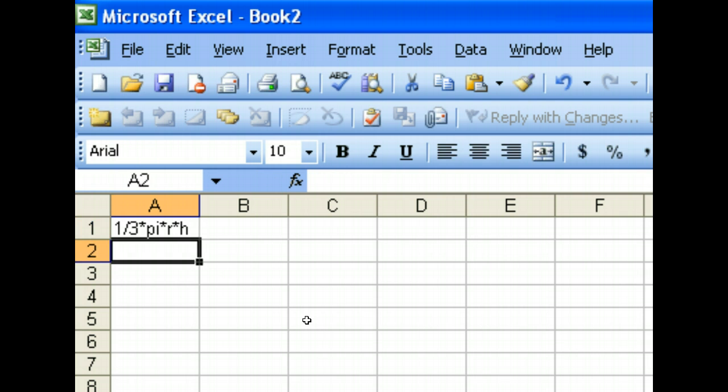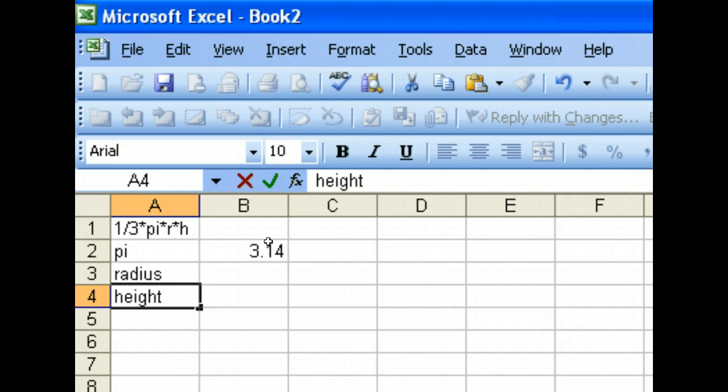So, for example, pi. We know that the pi value is something like 3.14. Now, other key things we need are radius. We need height. And we need the actual volume.